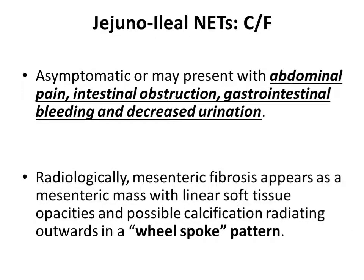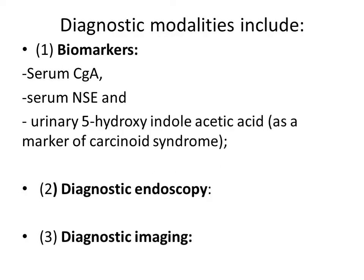Clinical presentations of jejunoileal NETs: patients usually remain asymptomatic, but some may present with abdominal pain, intestinal obstruction, gastrointestinal bleeding, and decreased urination. Radiologically, mesenteric fibrosis appears as a mesenteric mass with linear soft tissue strands and possible calcification radiating outwards in a wheel-spoke pattern. For diagnosis, biomarkers including serum CgA, serum NSE, and urinary 5-hydroxyindoleacetic acid can be measured. Diagnostic endoscopy and diagnostic imaging can also be performed.